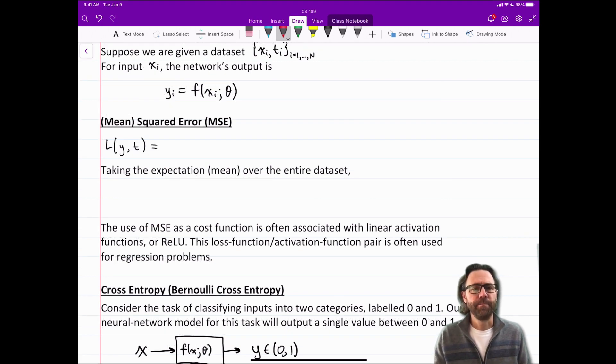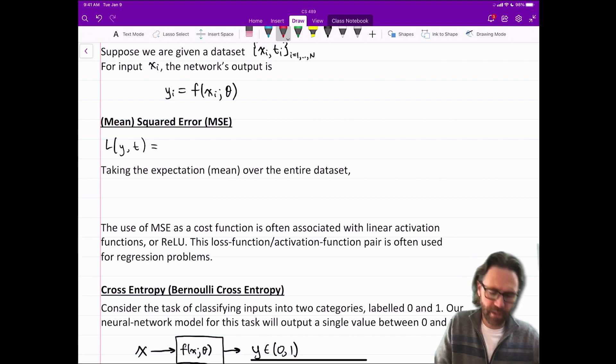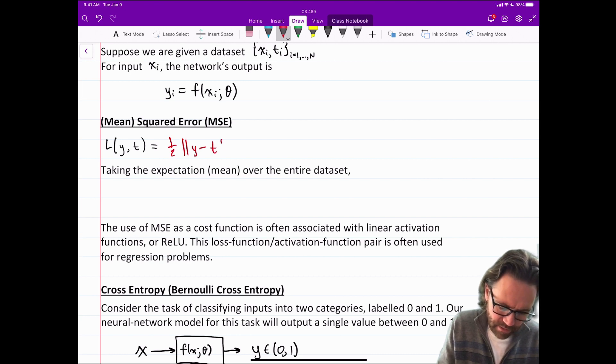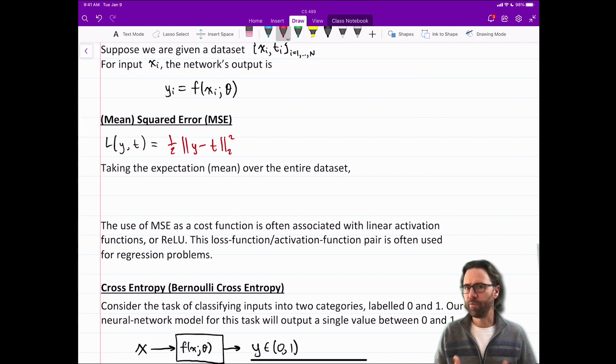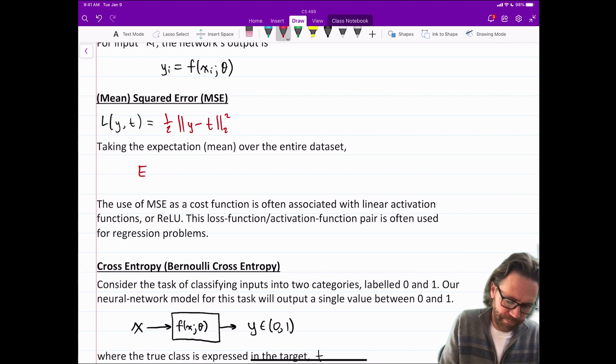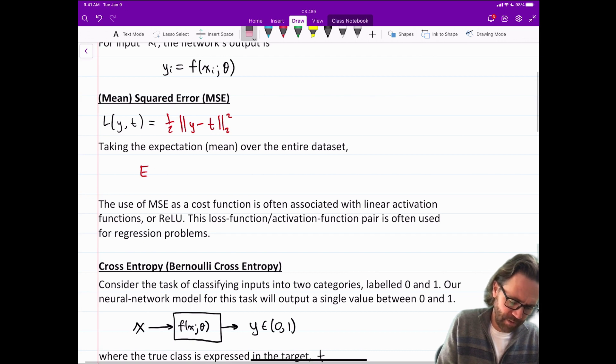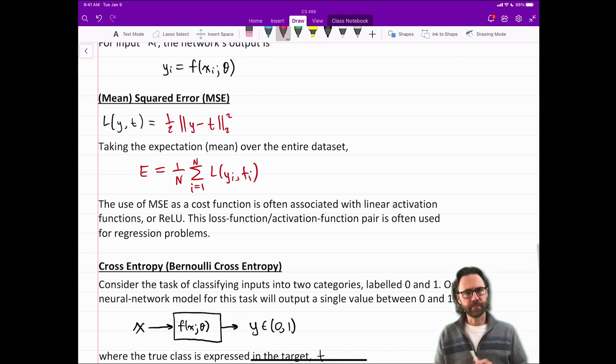So the first loss function we'll talk about is mean squared error or MSE. So the loss given an output Y and a target T is one half Y minus T 2 squared. So this is meant to be the 2 norm or Euclidean norm or Cartesian norm squared. So ultimately if Y and T are vectors this is just like the square of the length of the vector. Taking the expectation or mean over the entire data set then gives us our error function.